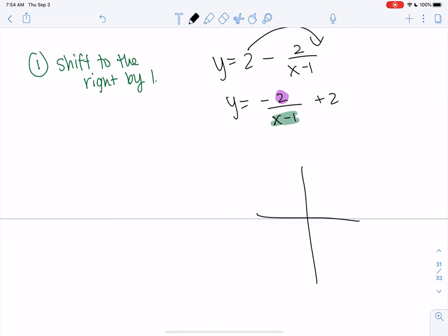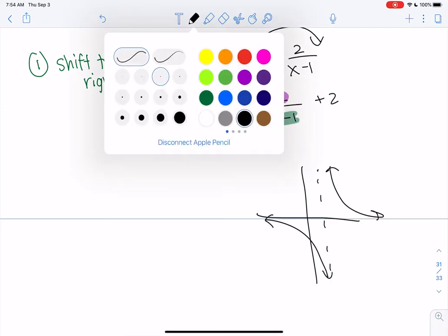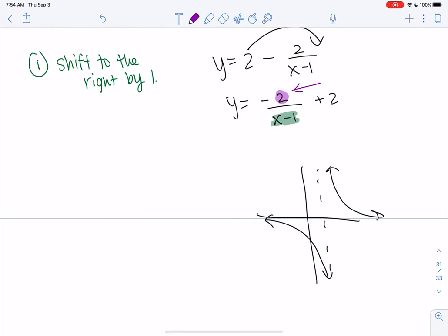So here was our new graph. It shifted to the right 1, and then 2. The 2 is telling me this is like a vertical stretch. So it stretches by 2.